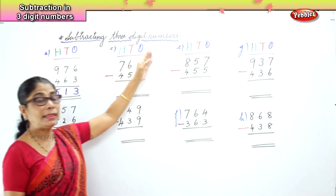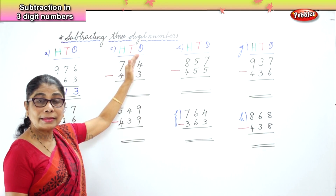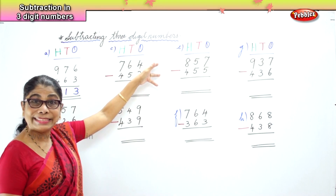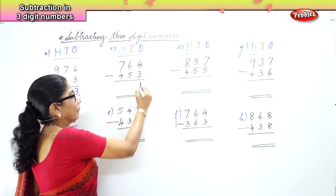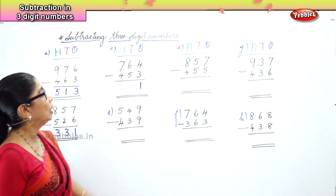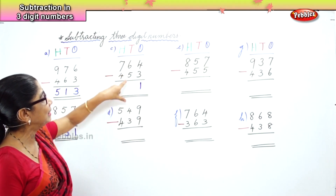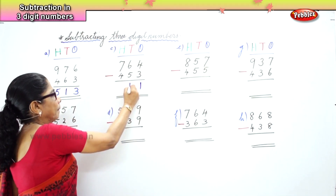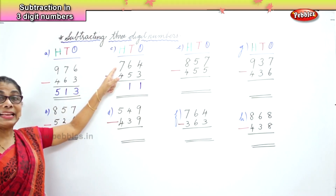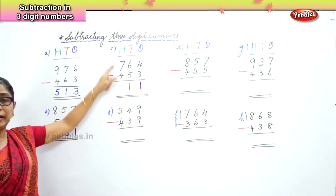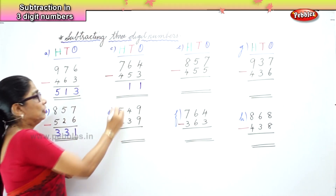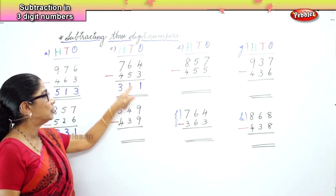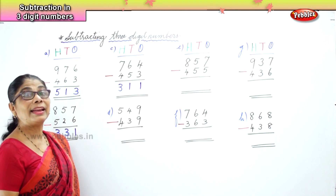Let's look at another one. In the 1s place, we have 4 ones minus 3 ones. 4 minus 3 is 1. We go to the 10s place: 6 tens take away 5 tens. 6 minus 5 is 1. We go to the 100s place: 700 minus 400. 7 minus 4 is 3. The answer is 311.